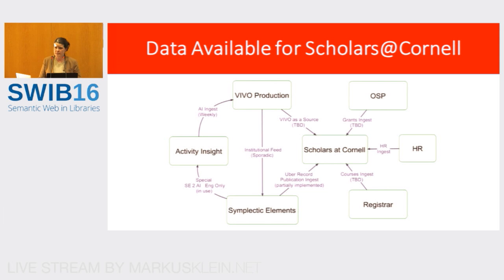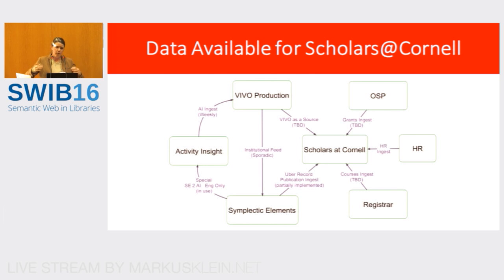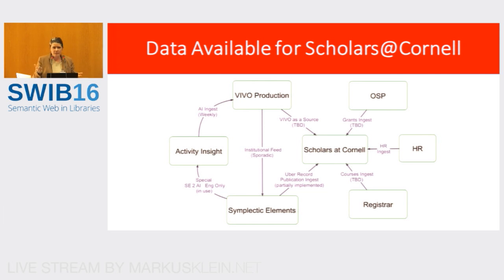We pull information from human resources, which is where we capture all the departmental affiliations and status of our faculty members and researchers. We pull from the registrar to see what kind of course loads are occurring. At the core of Scholars at Cornell is Symplectic Elements feeding into a new Vivo instance. We're using Symplectic Elements to manage various streams of data and help with merging, but also as an access point for faculty members to own articles — so they can say 'yes, that's my article' — because often author names like 'SmithJS' can be ambiguous.